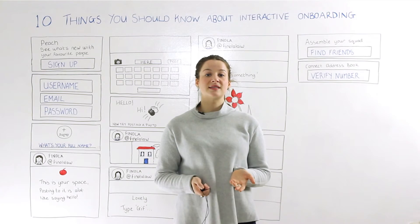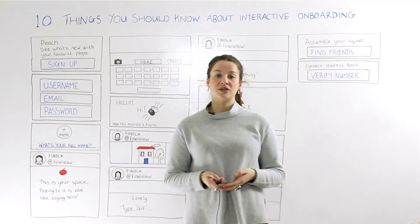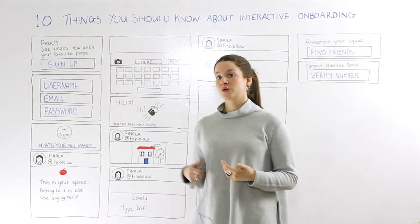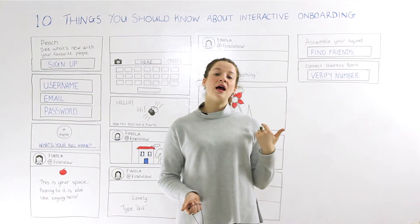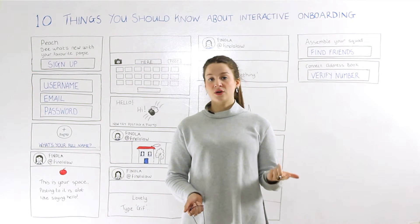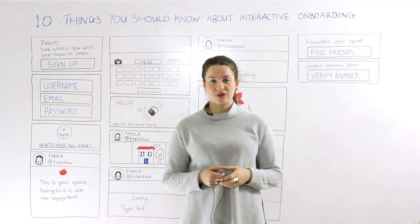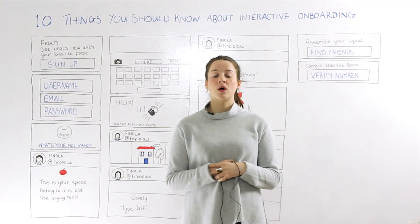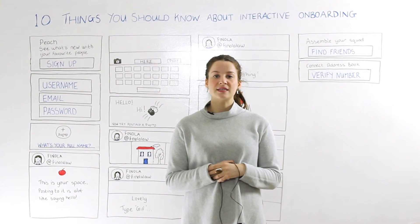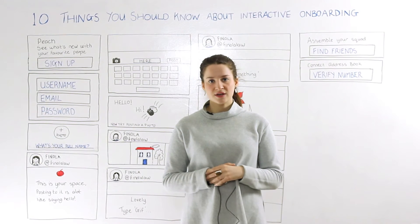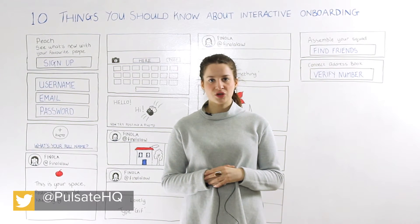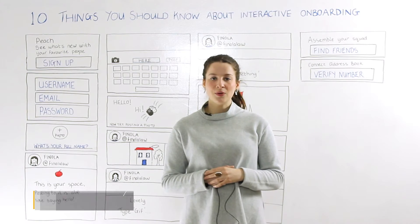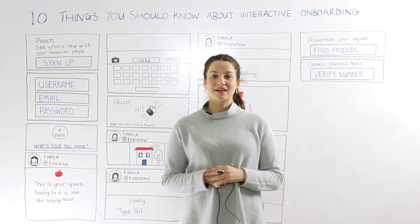Something we didn't look at today is how Peach asks for permission and access to different areas of your device — in order to get access to your location, your contacts, and your camera. But we'll be looking at that next week in our video on permissions. Thanks for tuning in today. Be sure to catch us on Twitter at Pulse8HQ. If you haven't subscribed to the Academy, make sure you do, or leave a comment below. See you next time.